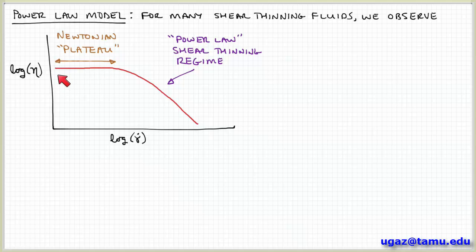So this region for slow flows or low shear rates where the viscosity is approximately constant is called the Newtonian plateau. Because in this regime, the fluid exhibits Newtonian behavior. The viscosity coefficient is approximately constant.